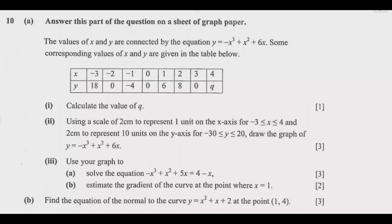Question 10a: answer this part of the question on a sheet of graph paper. The values of X and Y are connected by the equation Y = −x³ + x² + 6x. Some corresponding values of X and Y are given in the table below. Calculate the value of Q. I'll go step by step — the first thing you are asked is to find the value of Q.